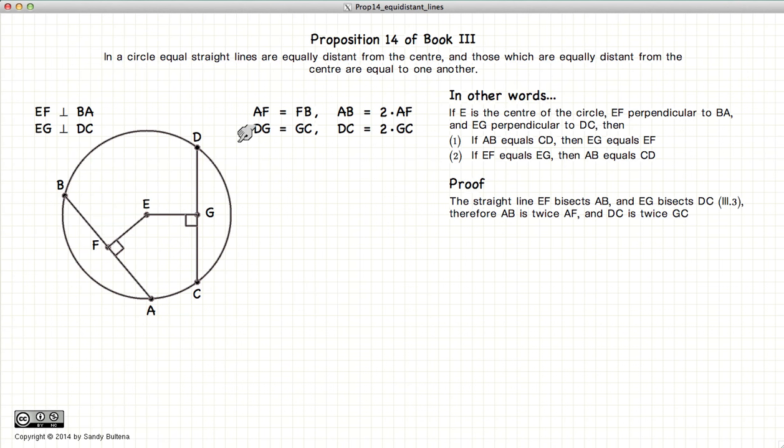So to begin our proof, the first thing we need to remember, according to Proposition 3 of Book 3, is if we have a line drawn from the center that intersects another line in the circle at right angles, then the point of intersection bisects the line. So in other words, the line FA is half the distance between B and A, and the distance GC is half the distance of DC, or conversely that AB is twice and DC is twice.